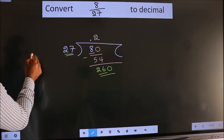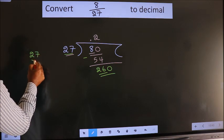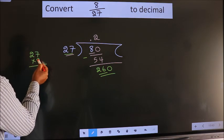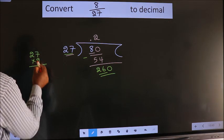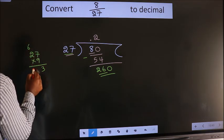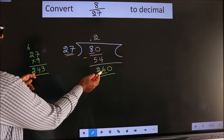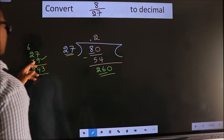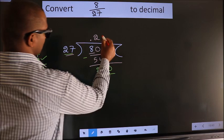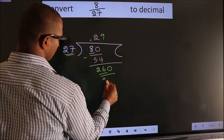So 27 times 9: 9 times 7 is 63, 3, 6. 9 times 2 is 18 plus 6 is 24. That's 243, close to 260, so we go with 9. So 9 times 243.